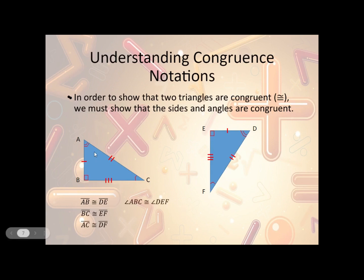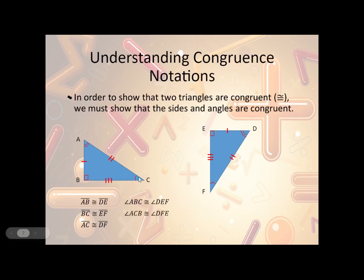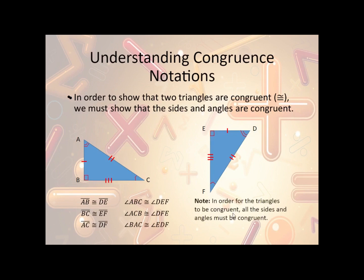Then I have my angles. Angle ABC is congruent to angle DEF because they're both 90 degrees — they both have the box. Then angle ACB, the single arc, is congruent to DFE, single arc as well. And then the double arc: BAC is congruent to EDF. So now we've shown that all the sides and all the angles are congruent, and therefore the triangles are congruent.